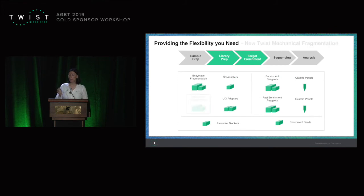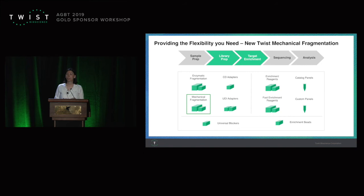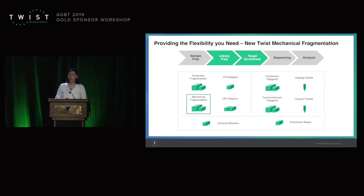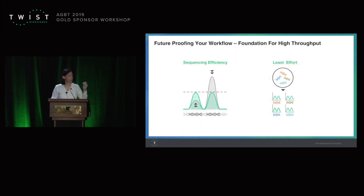Last, we are adding a mechanical fragmentation kit. If you are interested in using it — perhaps for FFPE samples — we have that kit as well. The idea is that we used to have great sequencing efficiency, and now we are adding to the workflow to enable you to get that efficiency with the least effort possible, saving you sequencing dollars thanks to efficiency and saving you effort in the lab.